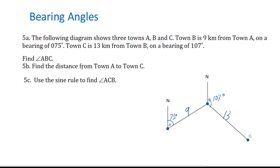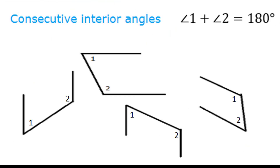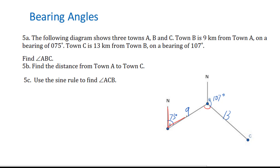Find angle ABC — this is the angle we are looking for. Think about the letter C shape. You see this forms a letter C, so label this angle as theta. For this angle theta, we will use 180 minus 75 degrees because they are consecutive interior angles, so you get 105 degrees.